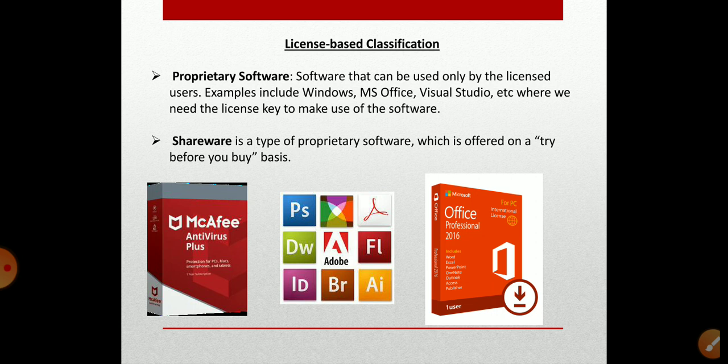The next type is shareware. It is a type of proprietary software which is initially provided free of charge to users, who are allowed and encouraged to make and share copies of the program. Shareware is often offered as a download from a website or on a compact disk included with a magazine. These are initially offered free, and users can share it with other users.